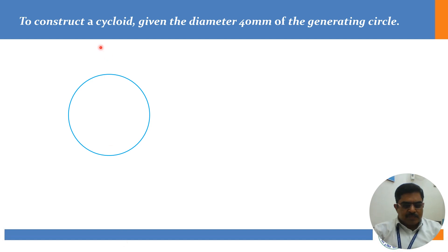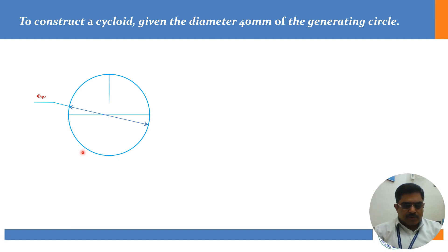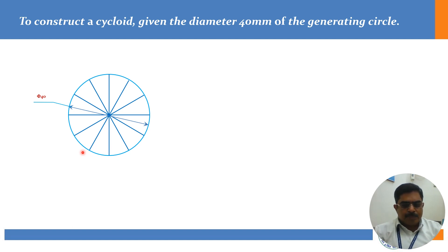To construct a cycloid, the given diameter of the generating circle is 40 mm. This is the generating circle, and the diameter taken to draw this cycloid is 40 mm. Phi is the symbol for diameter. The circle should be drawn with thin line only. Once you complete the circle, as usual we divide it into 12 equal parts. You are all aware of this method. Starting from here: 1, 2, 3, 3-dash, 6-dash, 9-dash, and 0 or 12-dash.